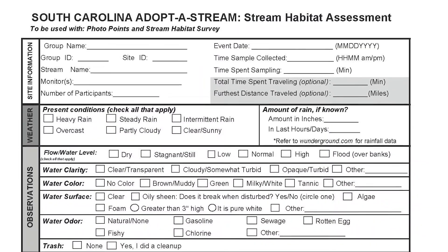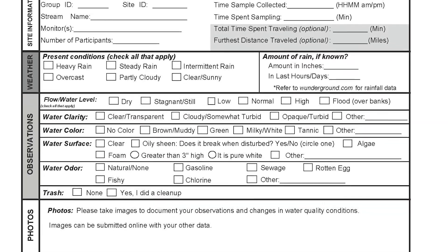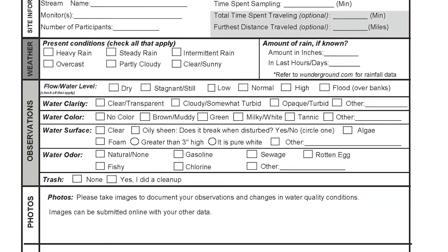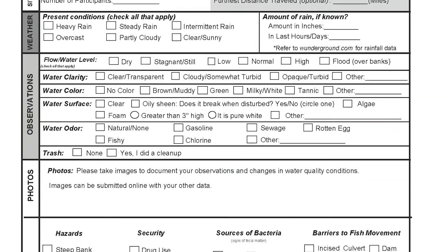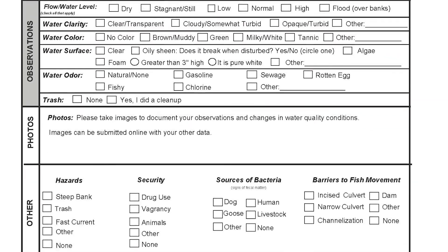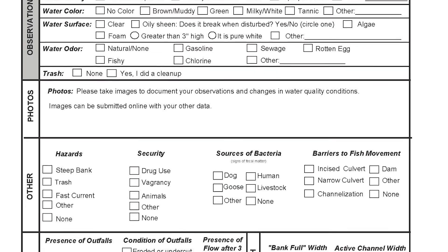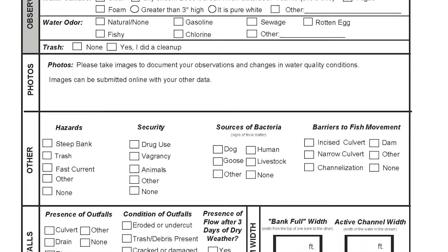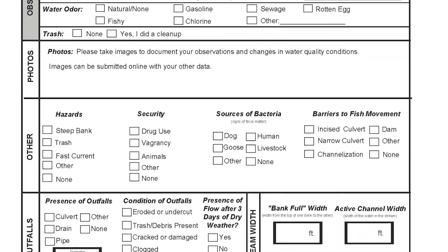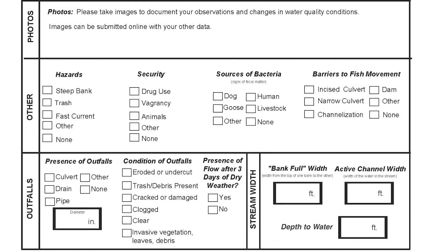The habitat assessment includes all of the observations made each monitoring event, plus assigns a numeric score, 1 through 10, to different described conditions of your stream corridor. Together, these conditions rate your stream as poor, fair, good, or excellent. Different events in your watershed can affect this score, both good and bad.